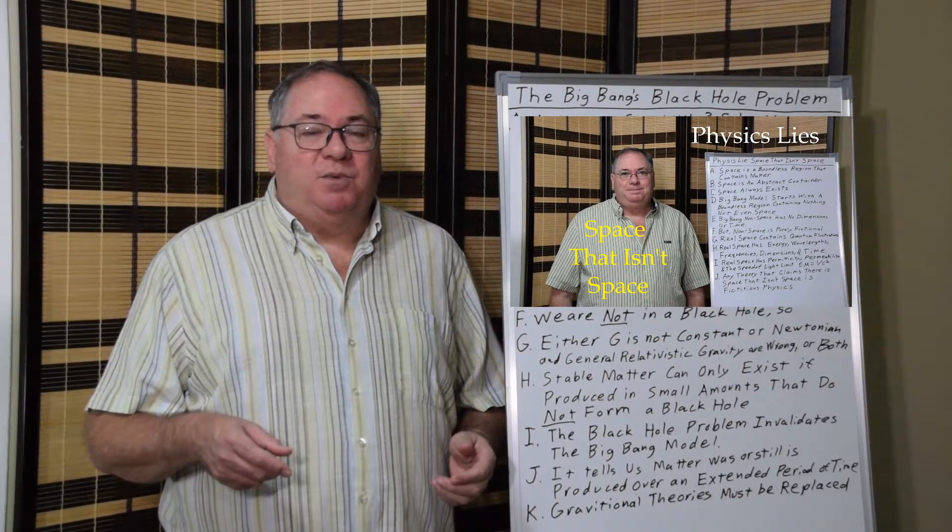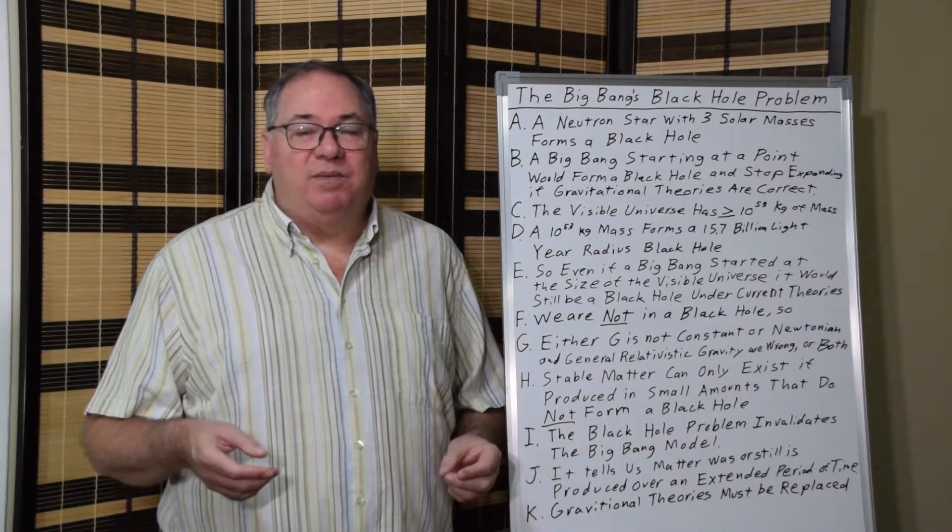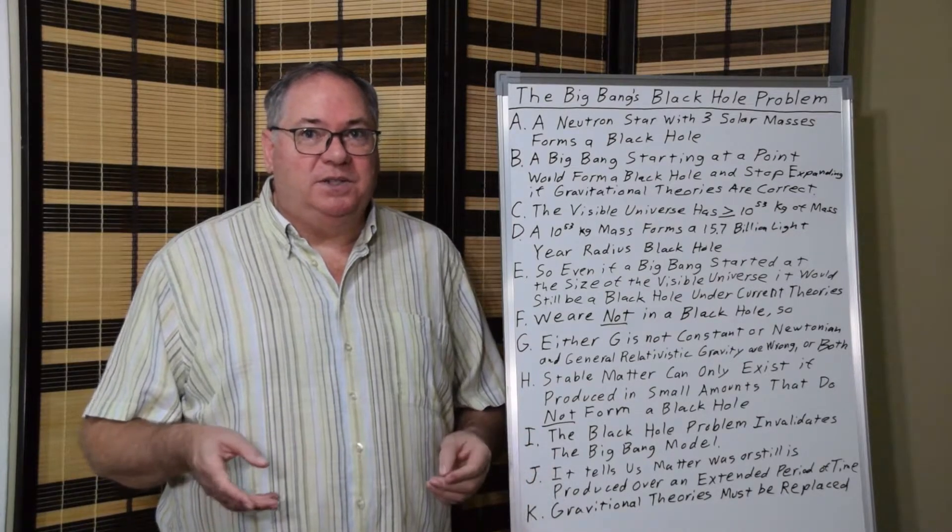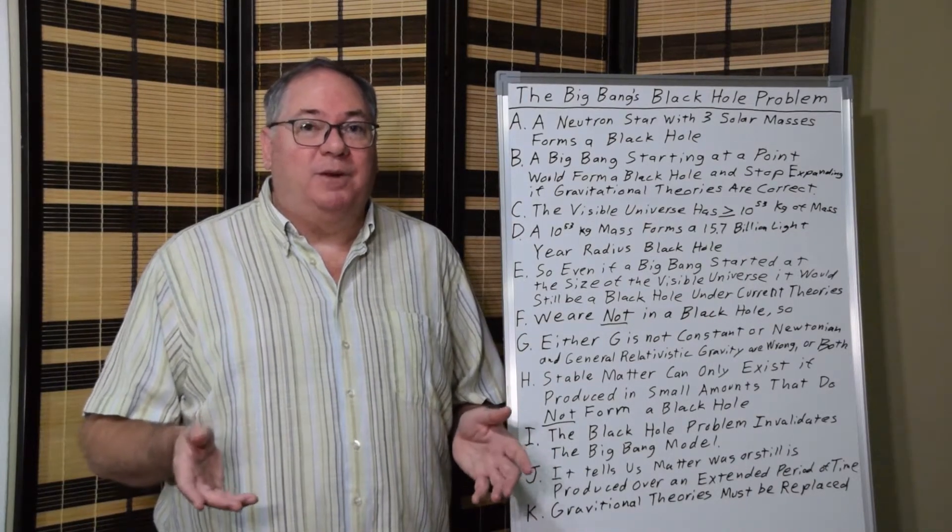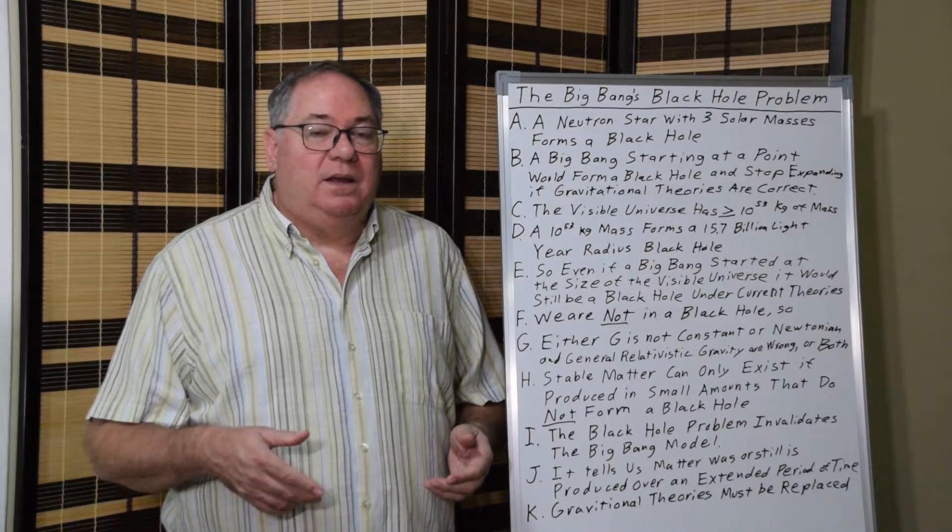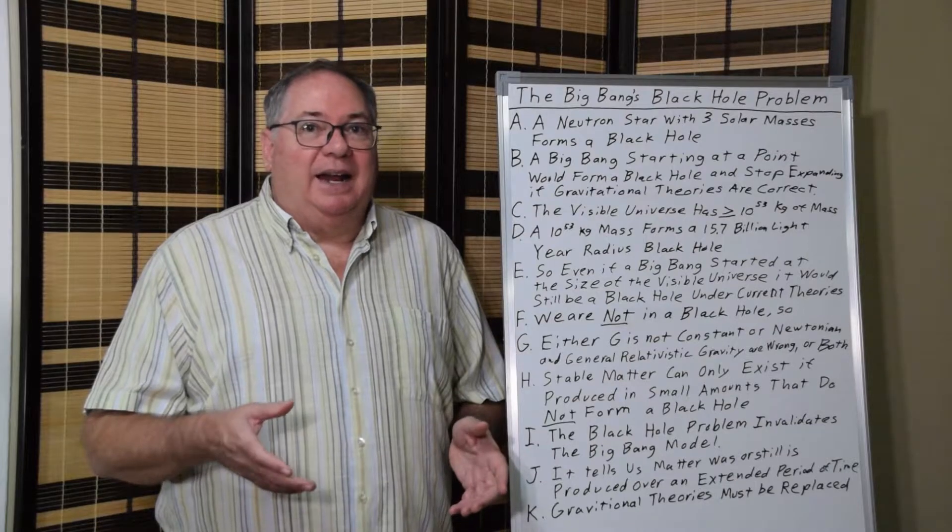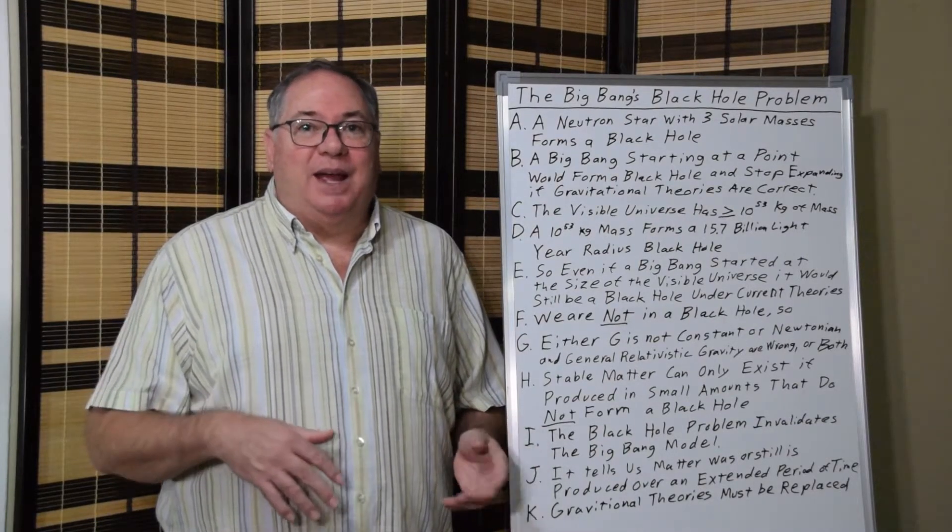And as I mentioned in my video on space that isn't space, Big Bang theorists will also say, well, there's space that doesn't have quantum field, which is a fictitious type of space that's not known to exist, but they have to make it up in order for their theory to work. So they have a fictitious theory about space and they use that to cover up the black hole problem.